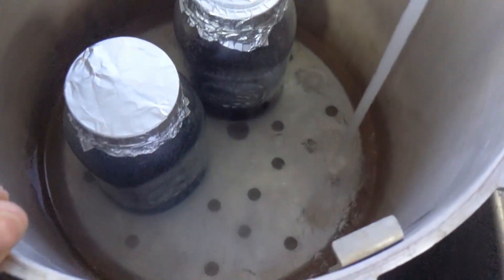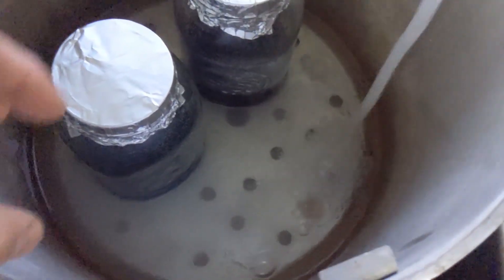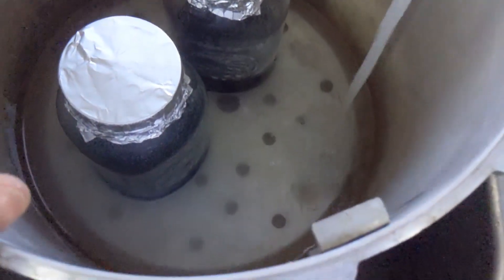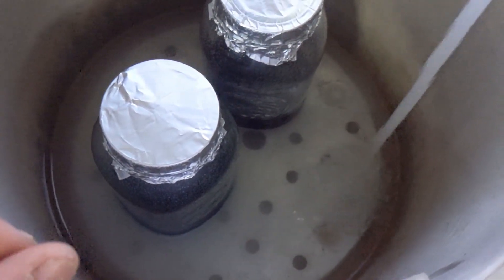So you kind of want to go about a third of the way up the jars. And we're going to be pressure cooking for 40 minutes once it reaches that 15 psi.